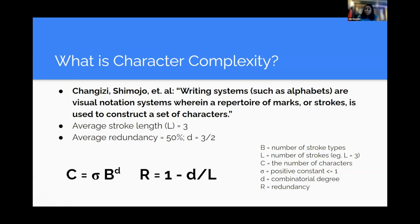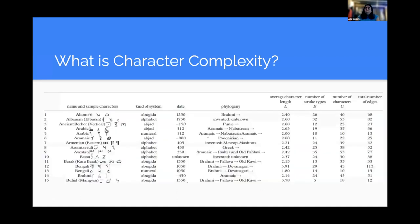At the end of their study, they found that the average number of strokes it takes to create a character is three, regardless of the size of the actual writing system. The average redundancy was 50%, meaning if you had a character and you took out half of its strokes, you would still likely be able to identify it. Here is a table from their paper showing examples of different scripts or writing systems they worked with, the kind of system it was, and some metrics including the average stroke length, the number of strokes, and the number of characters. I'd also like to mention that Anna has a short talk discussing these systems, so I recommend checking that out too.